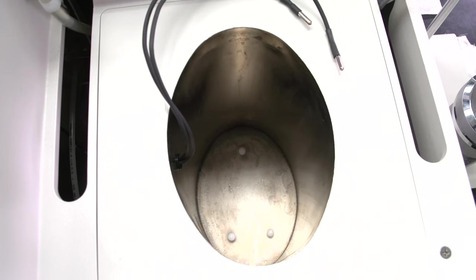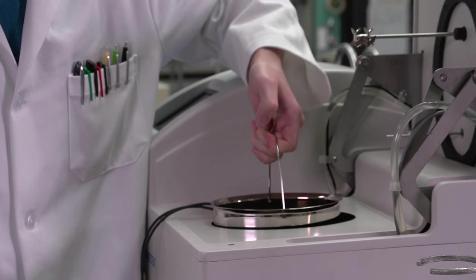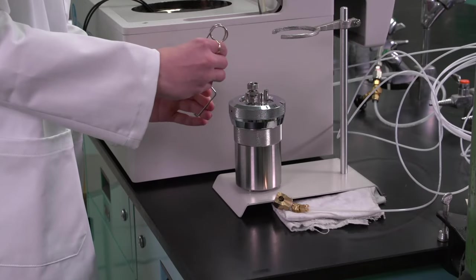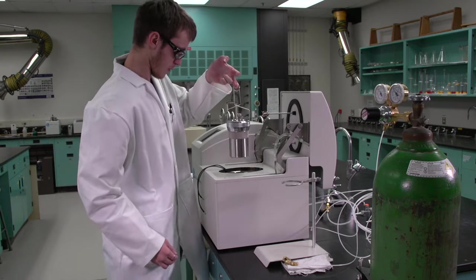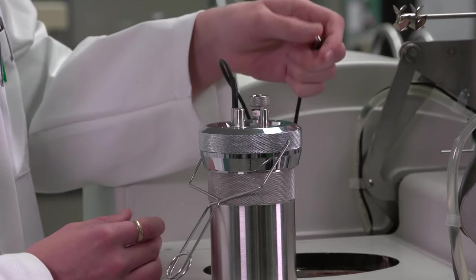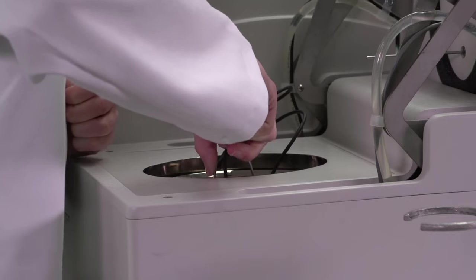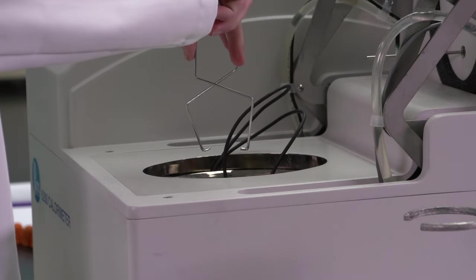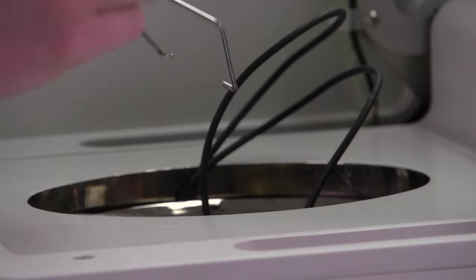Make sure the three pegs on the bottom of the calorimeter align with the indents on the bottom of the bucket. Attach the lifting handle to the bomb and place it on the side of the calorimeter. Insert the ignition wire leads into the terminal connections on the bomb head and lower the bomb into the water. Remove the lifting handle making sure all water droplets fall back into the bucket so that the total mass of the water does not change.